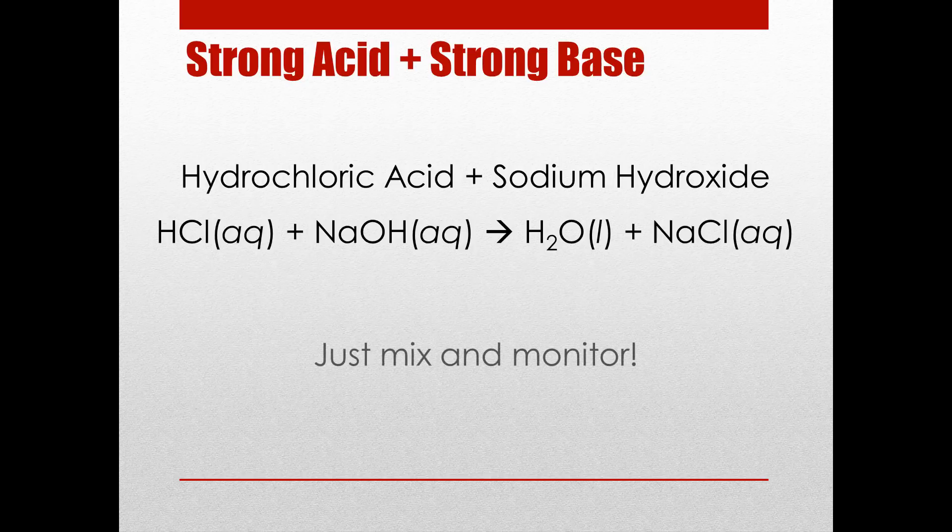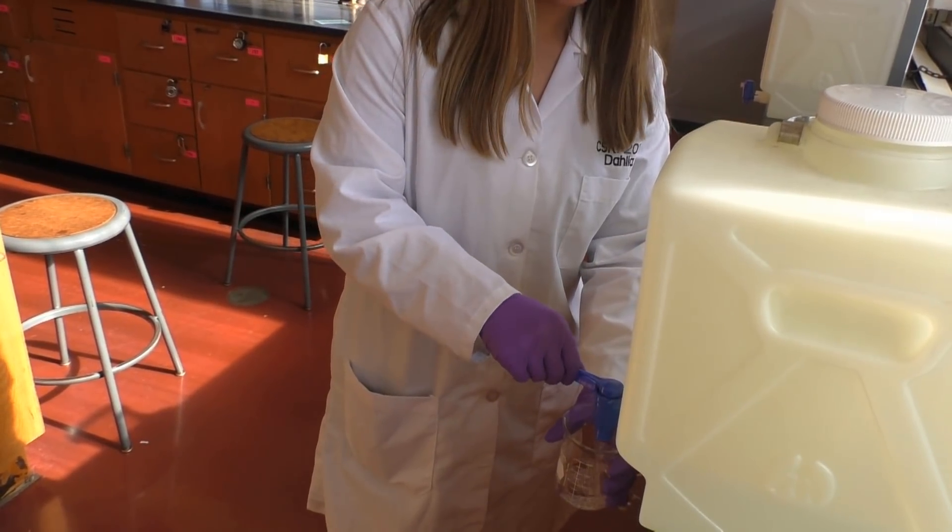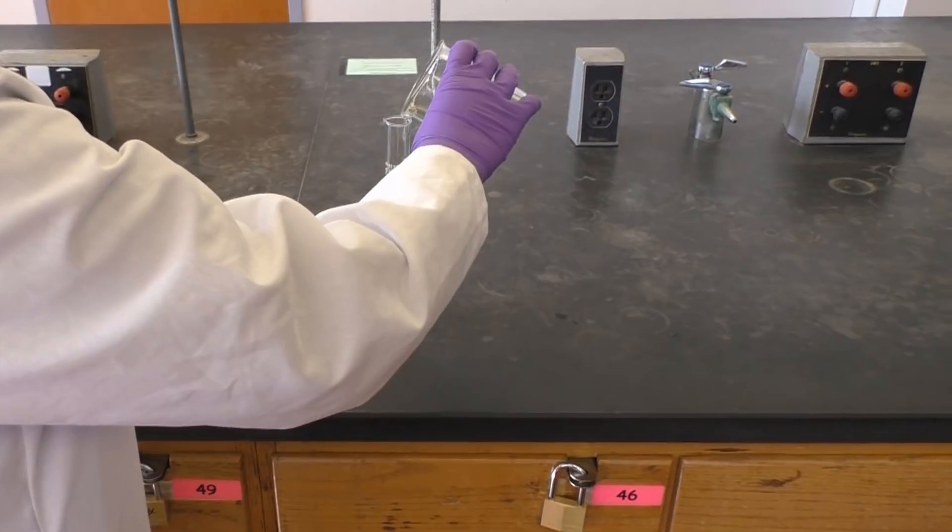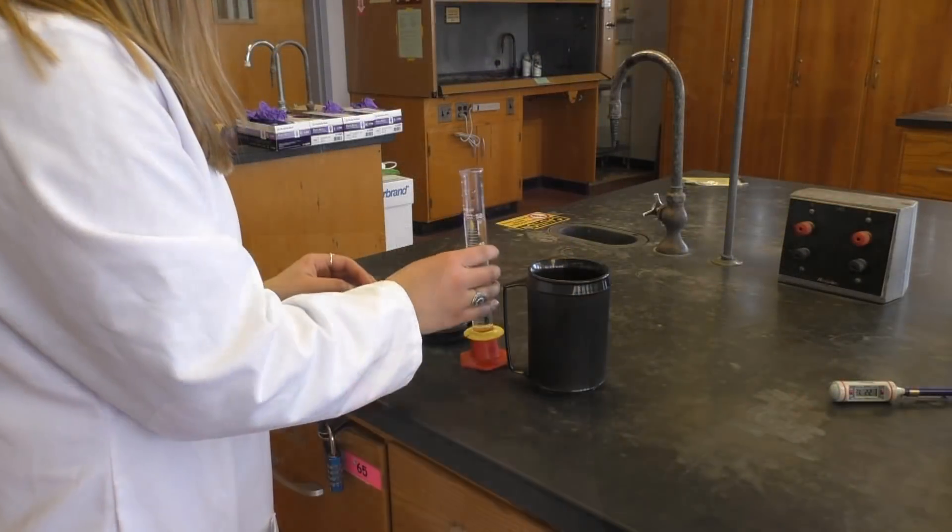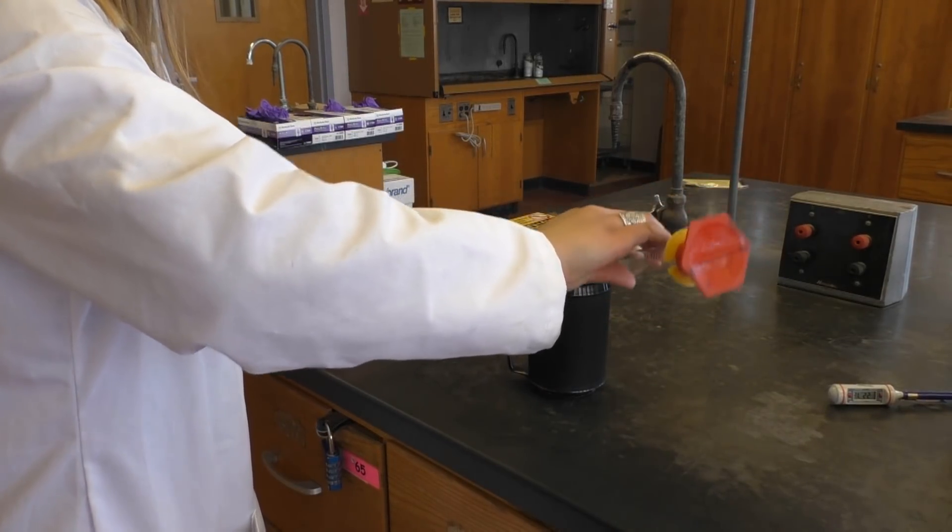To measure the heat of this reaction, all you need to do is mix the two solutions in your calorimeter and monitor their heat by taking the temperature. You first need to obtain 50 mL of NaOH. Don't measure from the carboy directly because this will hold up the line behind you. Instead, just add approximately 50 mL to your beaker and then carefully measure out the correct amount in your graduated cylinder. Then just add your NaOH to your calorimeter.